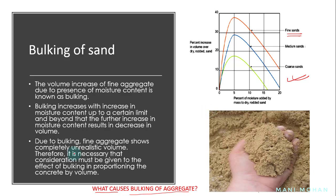Unrealistic volume is shown by fine aggregate due to bulking. When concrete proportioning is to be performed, the sand bulking issue is a concern. If the effect of bulking is not accounted for properly, the concrete design will have an insufficient amount of sand, resulting in a harsh mix. Bulking of sand will also affect the yield of concrete for a given cement content.